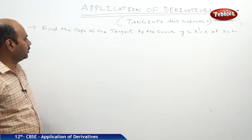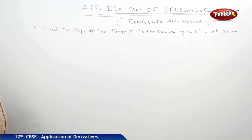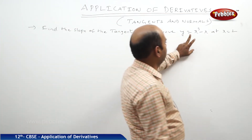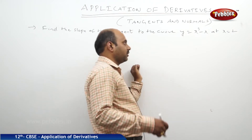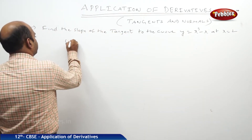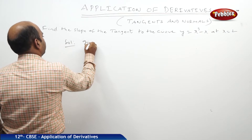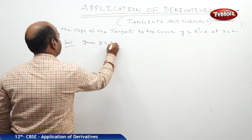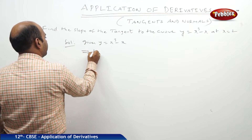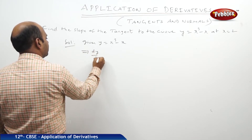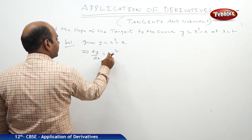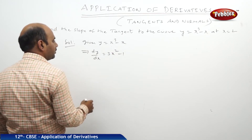A small question we will be taking. Find the slope of the tangent to the curve y = x³ - x at x = 2. Given y = x³ - x, we differentiate with respect to x. So dy/dx = 3x² - 1.